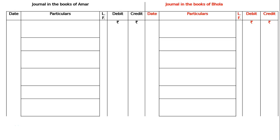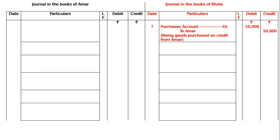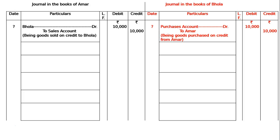Ammar sells goods to Bhola for Rs.10,000 and draws upon him a bill for the amount payable three months after date. In the books of Bhola: Purchases account debited to Ammar, being goods purchased on credit from Ammar for Rs.10,000. In the books of Ammar: Bhola debited to Sales account, being goods sold on credit to Bhola and drawing upon him for the amount payable three months after date.